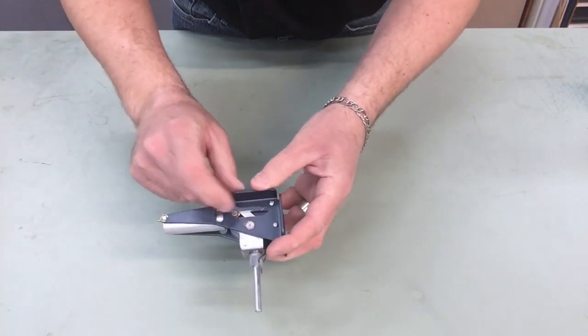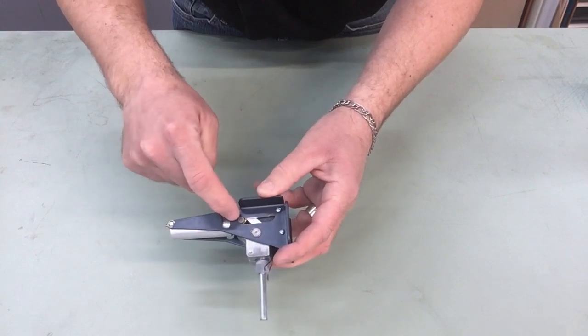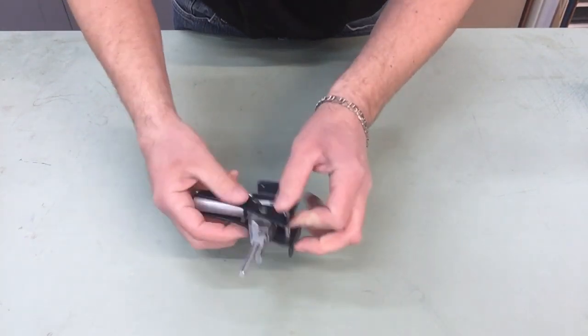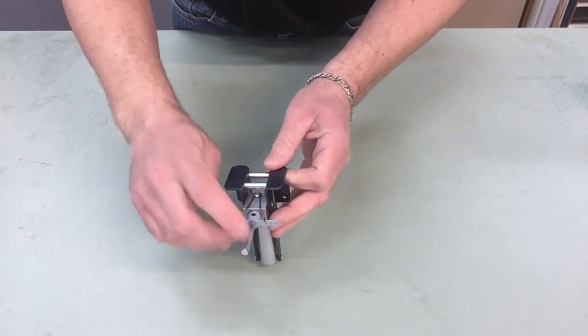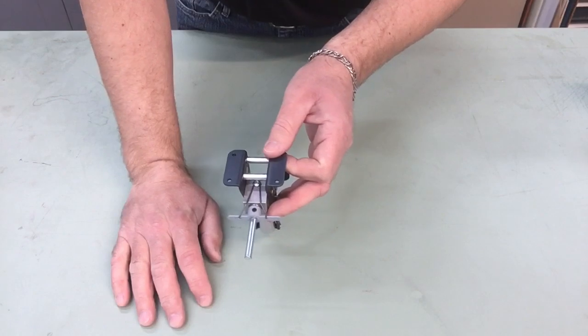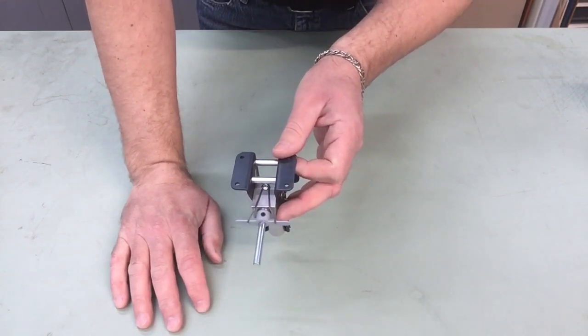You have your up and down locks. So as you can see this is a beefy trunnion on it. Nice sturdy extra long pin for attaching your Robo Strut.